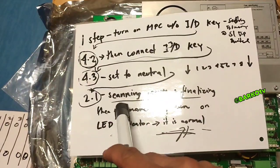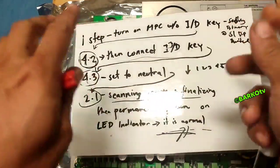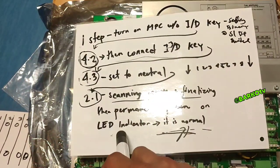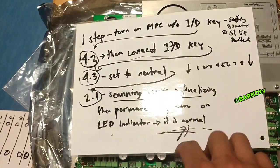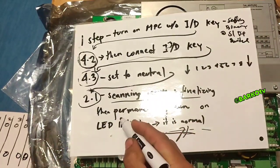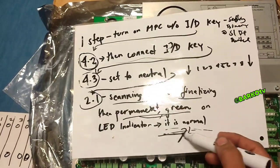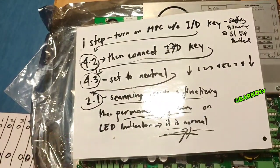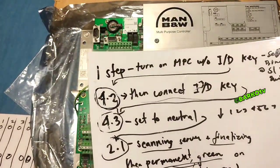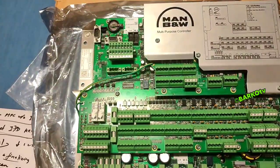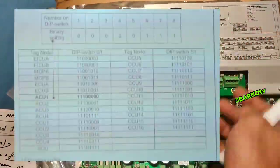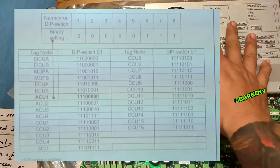After that, alarm 2.1 means it is scanning the server and finalizing. That's it. Then wait for the green LED indicator. Email your office again to get the binary key, and you can run your engine without the ID key.